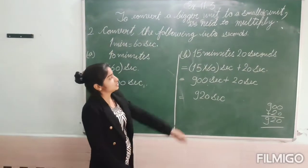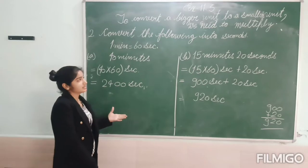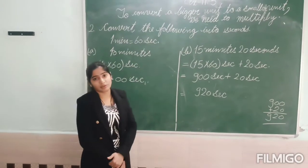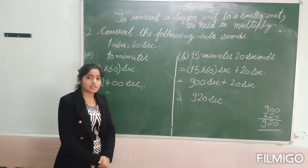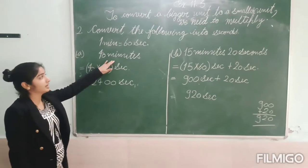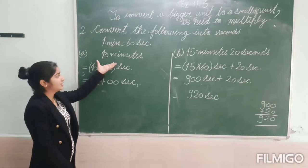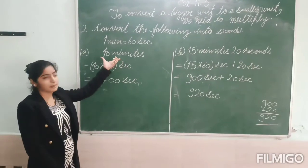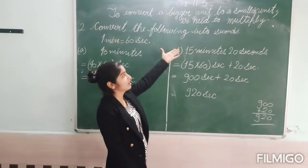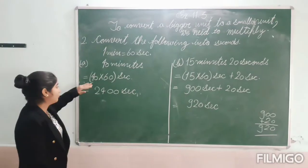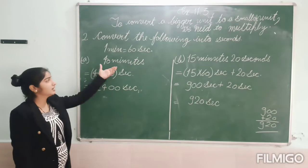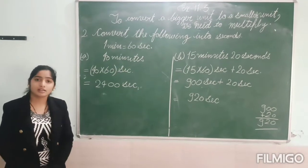Convert the following time into seconds. Here are some examples. We need to know that 1 minute equals 60 seconds. For example, 40 minutes — 40 minutes is the bigger unit and seconds is the smaller unit, so we multiply 40. Why do we multiply? Because minutes is the bigger unit and seconds is the smaller unit.